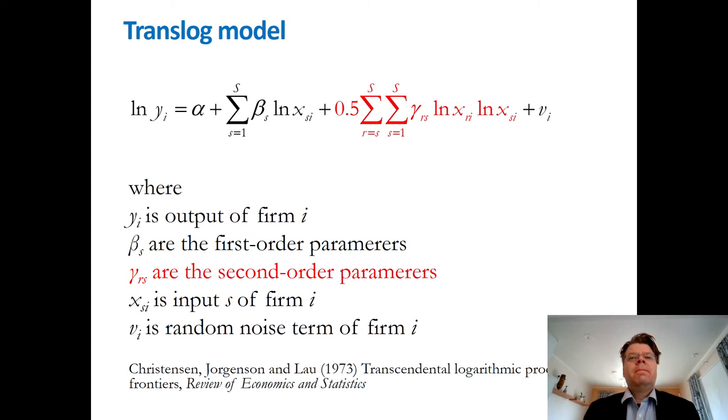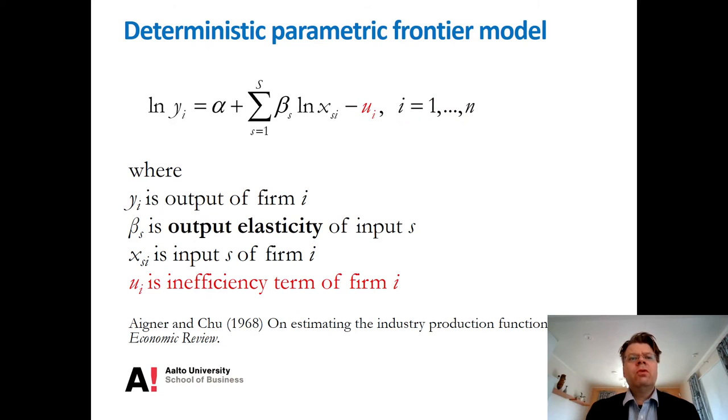Now notice that in this classical economic estimation of the production function, I have only included the random noise term. There is not any kind of asymmetric inefficiency term present in these models by Cobb-Douglas or Christensen, Jorgensen and Lau's contribution. If you go then to the efficiency literature, there is an earlier contribution by Dennis Aigner and his co-author Chu, where they'll consider parametric formulation, but instead of using the noise term, they have an inefficiency term. In that sense, it's a deterministic model that there is only inefficiency present, like in the DEA model, but no noise term.